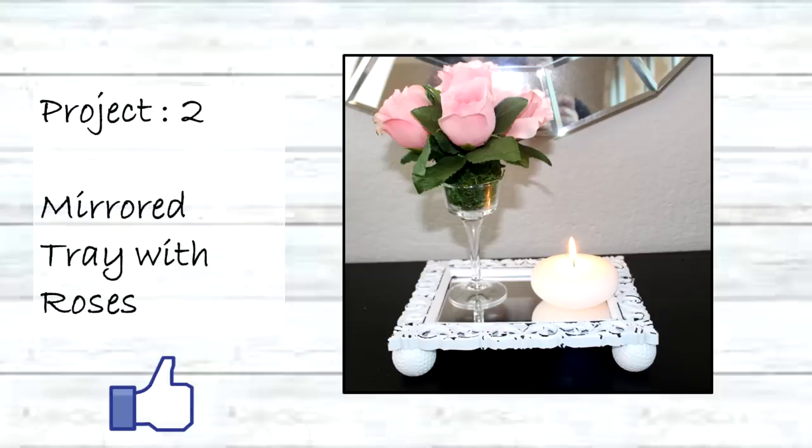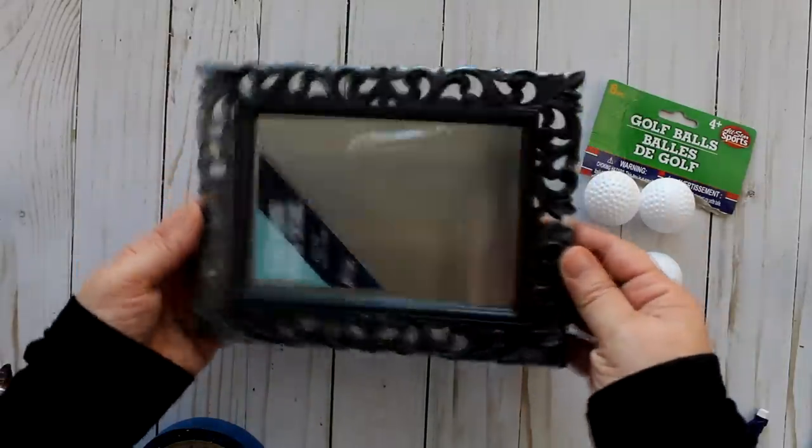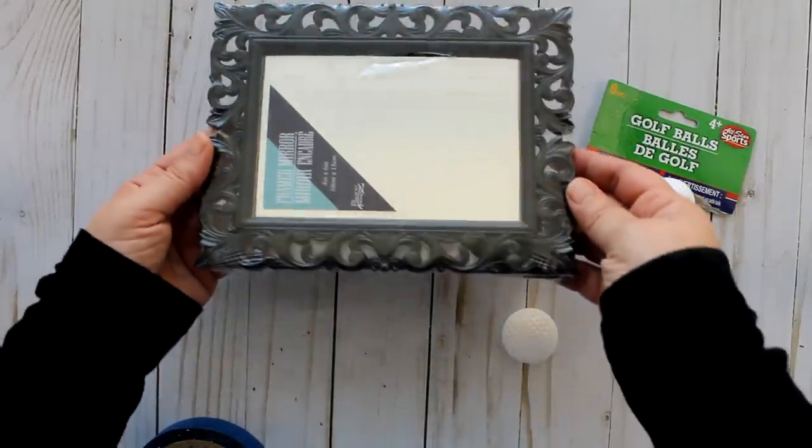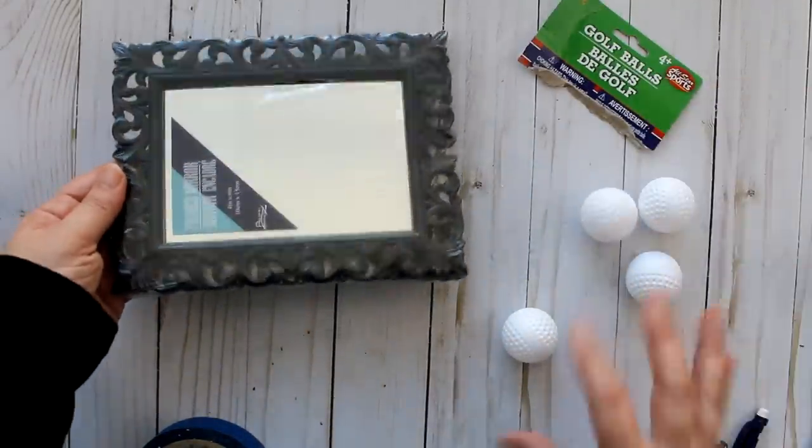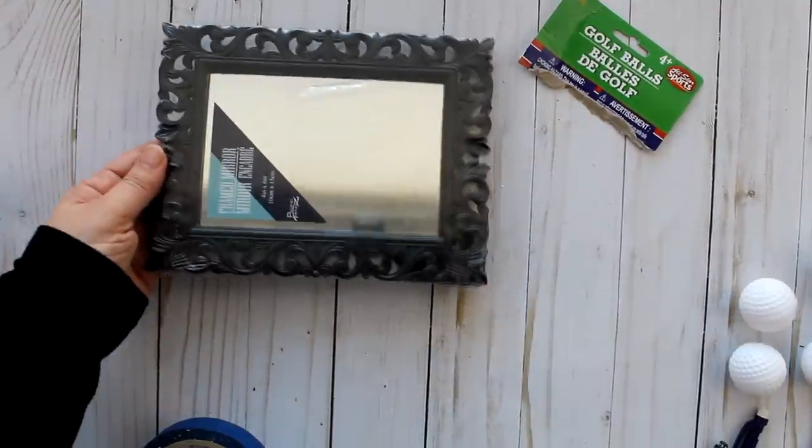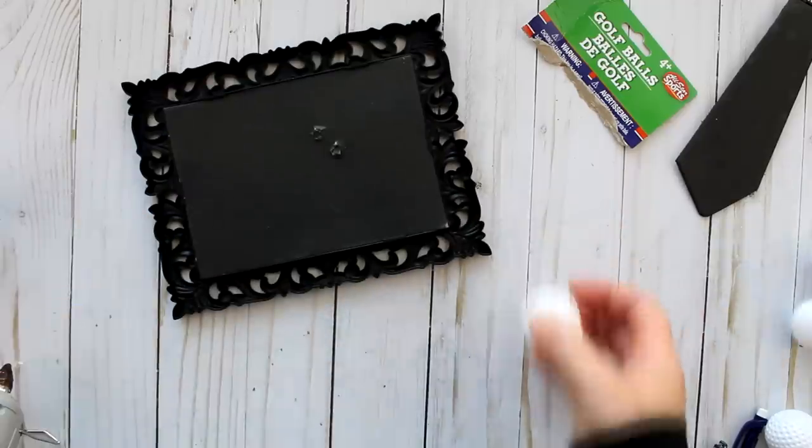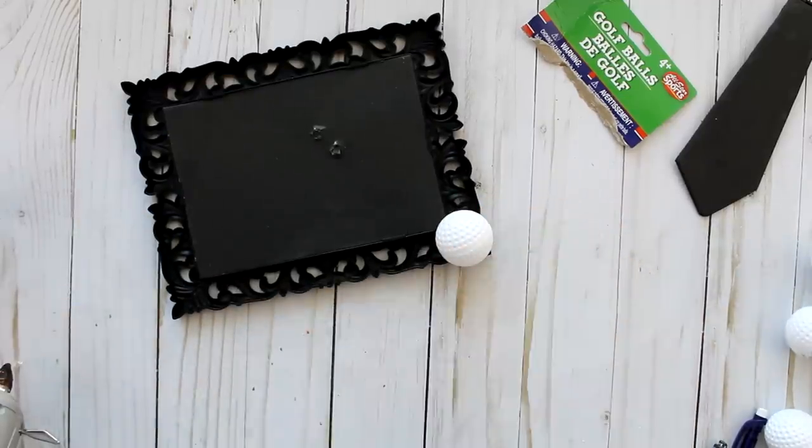Next up is this mirror tray with roses. To start I'm going to use this ornate filigree black mirror that I purchased from the Dollar Tree, and I'm also going to use some of these golf balls that I also got from the Dollar Tree. I'm going to use the golf balls as legs for the tray and first I'm going to remove the mirror stand. You can just pull that right off, it comes right off.